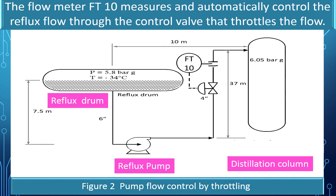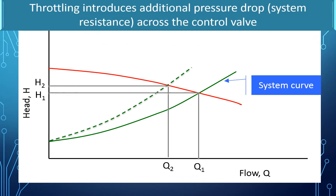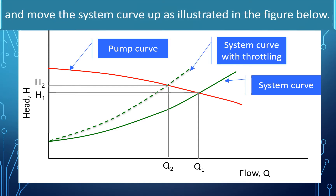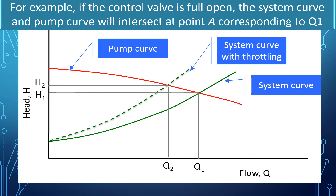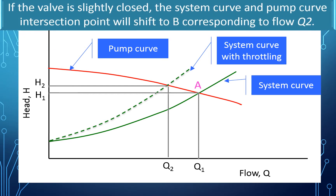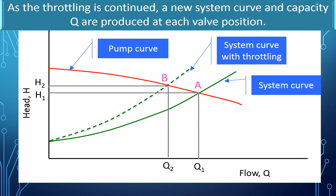The reflux flow delivered by the pump is controlled by a flow control valve. The flow meter FT10 measures and automatically controls the reflux flow through a controlled valve that throttles the flow. Throttling introduces additional pressure drop — system resistance across the control valve — and moves the system curve up. The result is upward movement of the intersection point of the system curve on the pump curve. For example, if the control valve is fully open, the system curve and pump curve intersect at point A corresponding to flow Q1. If the valve is slightly closed, the intersection shifts to point B corresponding to flow Q2. As throttling is continued, a new system curve and capacity Q are produced at each valve position.